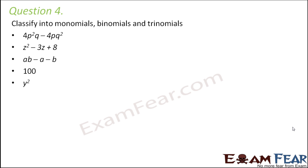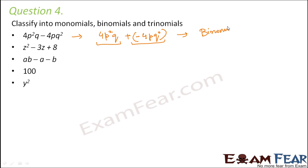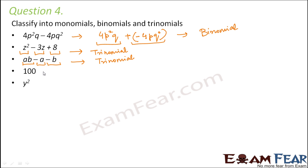Question number 4: Classify into monomial, binomial or trinomial. The expression 4p squared q minus 4pq squared has two terms, so it is a binomial. The expression z squared minus 3z plus 8 has three terms, making it a trinomial. Similarly, ab minus a minus b is also a trinomial. The number 100 is just one term, so it is a monomial, and y squared is also a monomial.